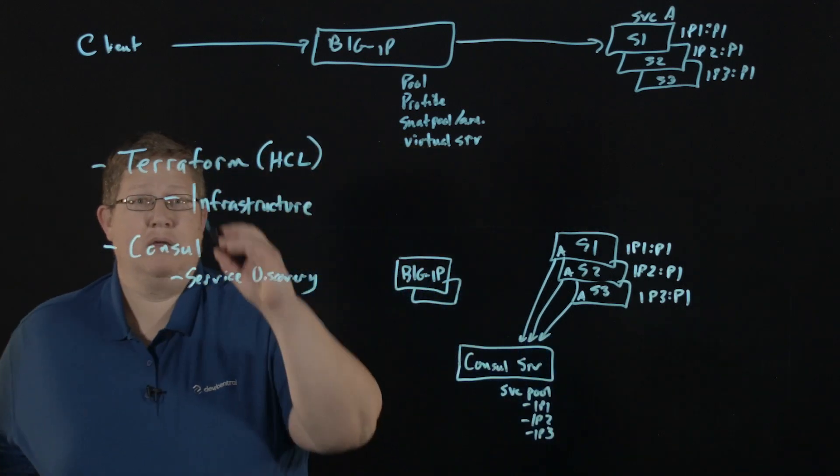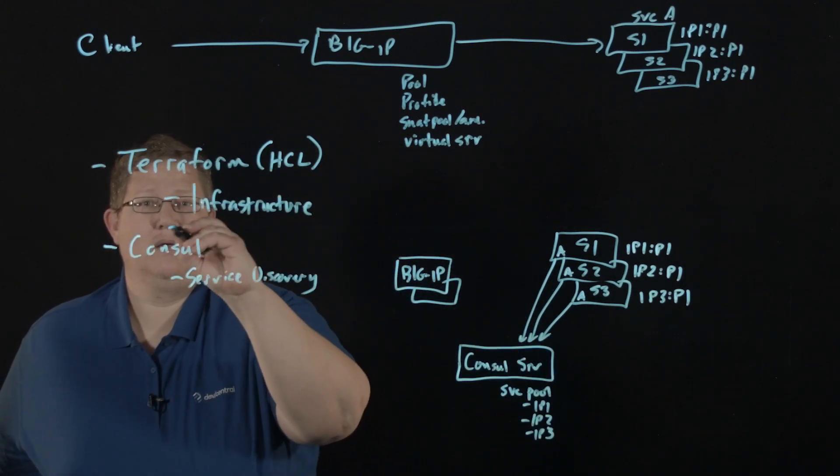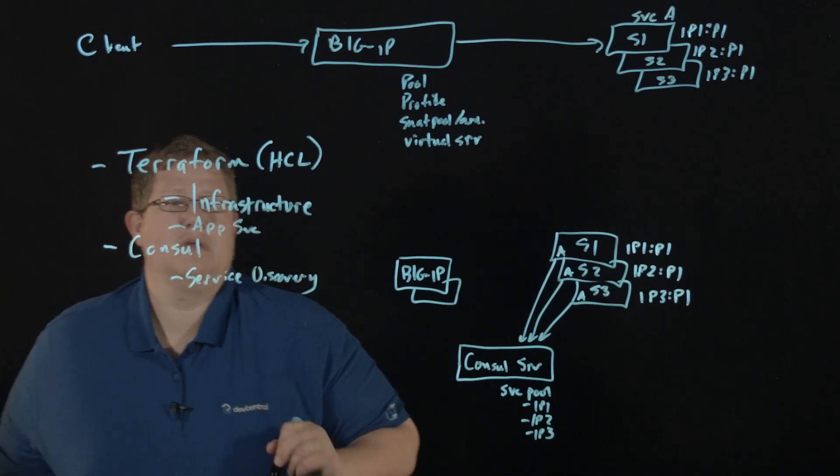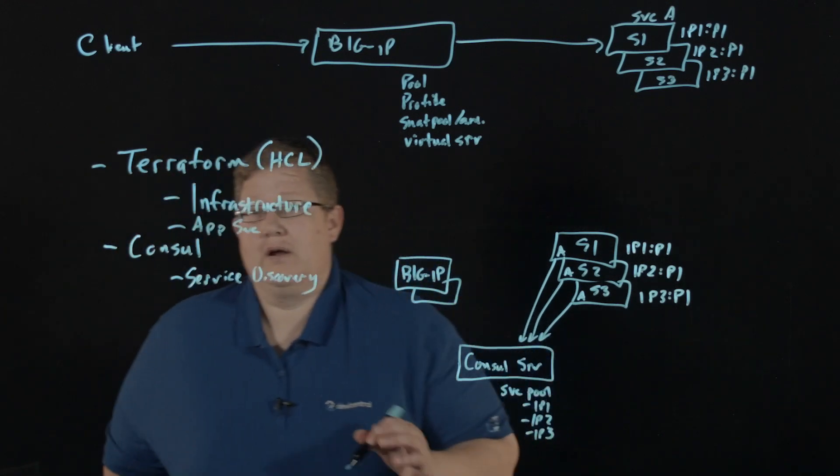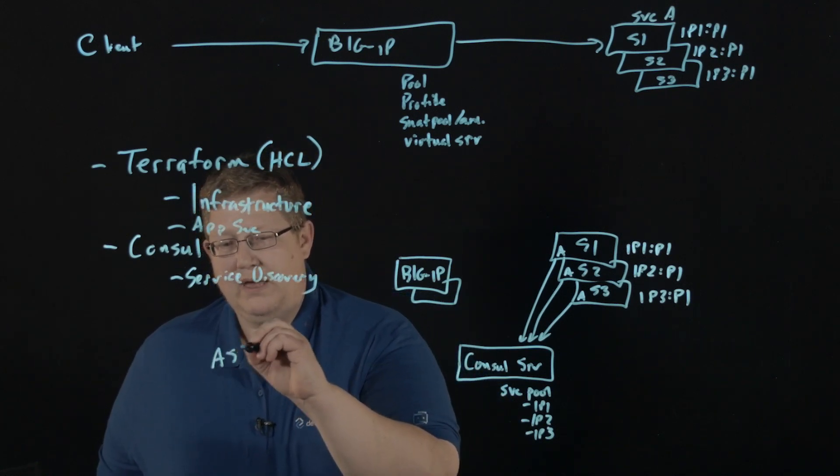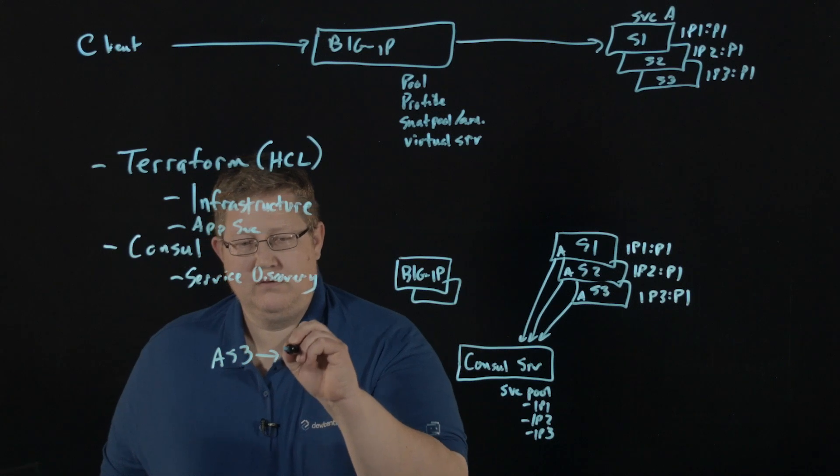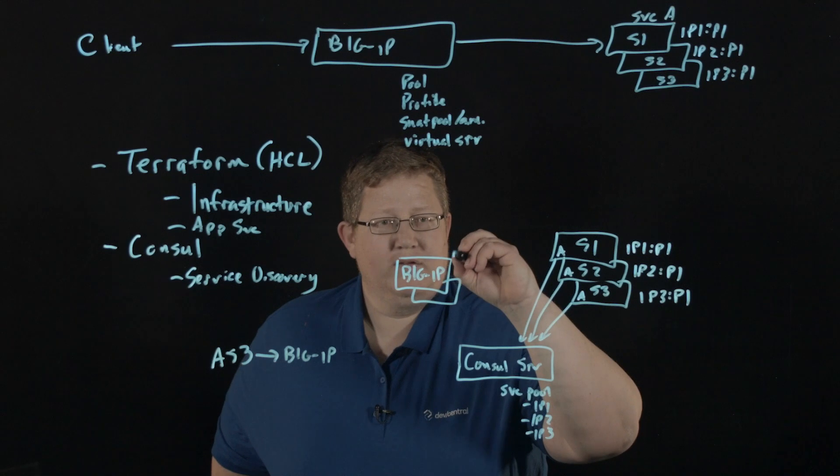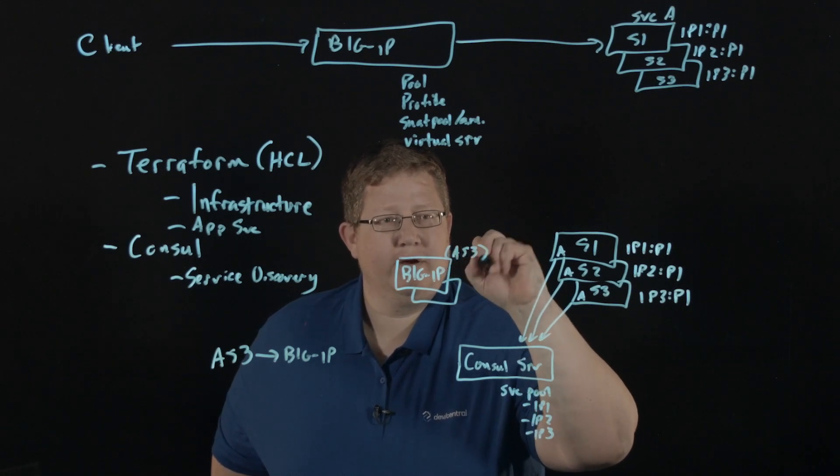So then, with Terraform, I can then deploy an app service. And so here, what I'm going to do is I'm going to send AS3 to Big IP. And this is an RPM that gets installed on the Big IP. So AS3 now sits here.